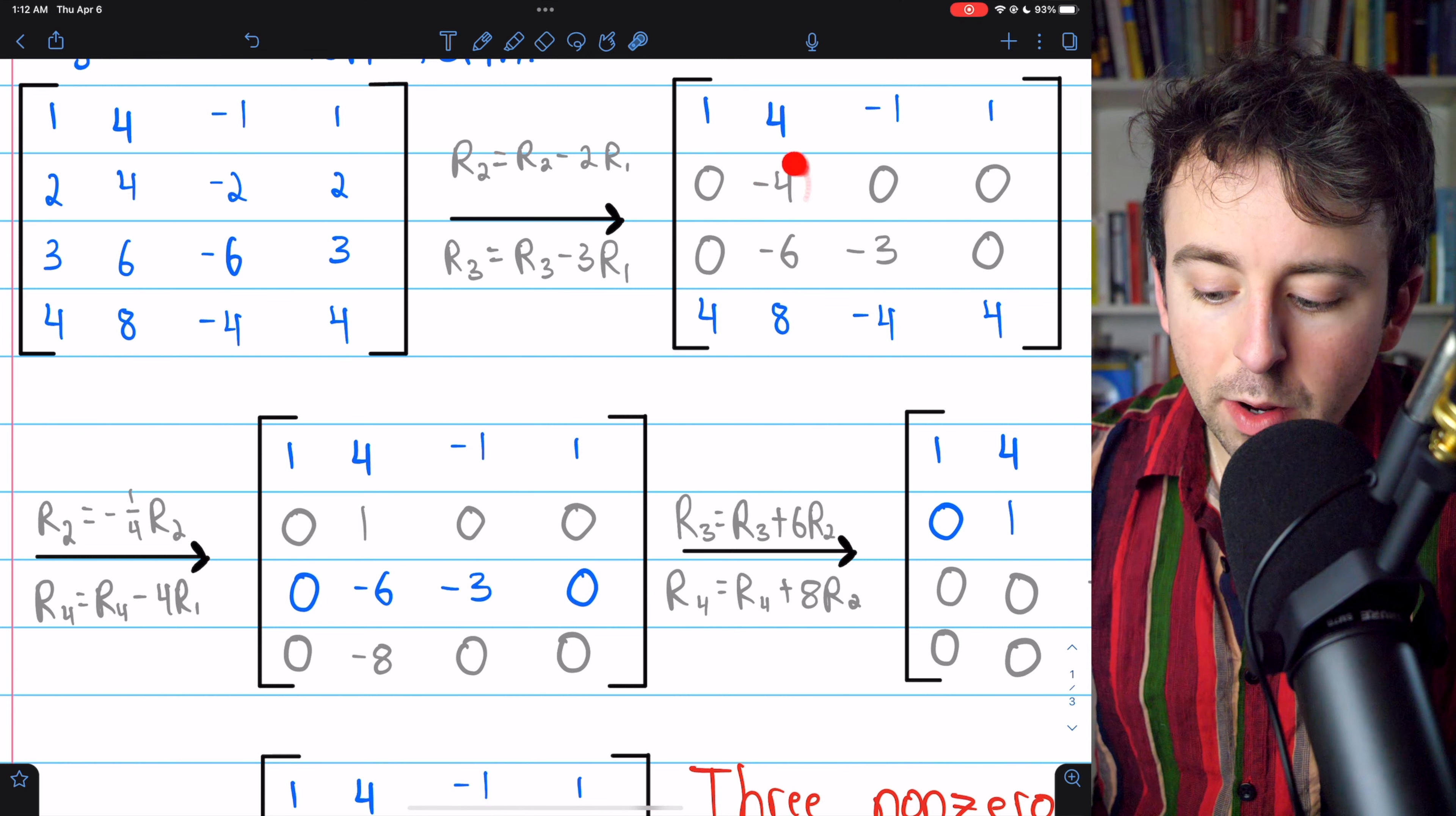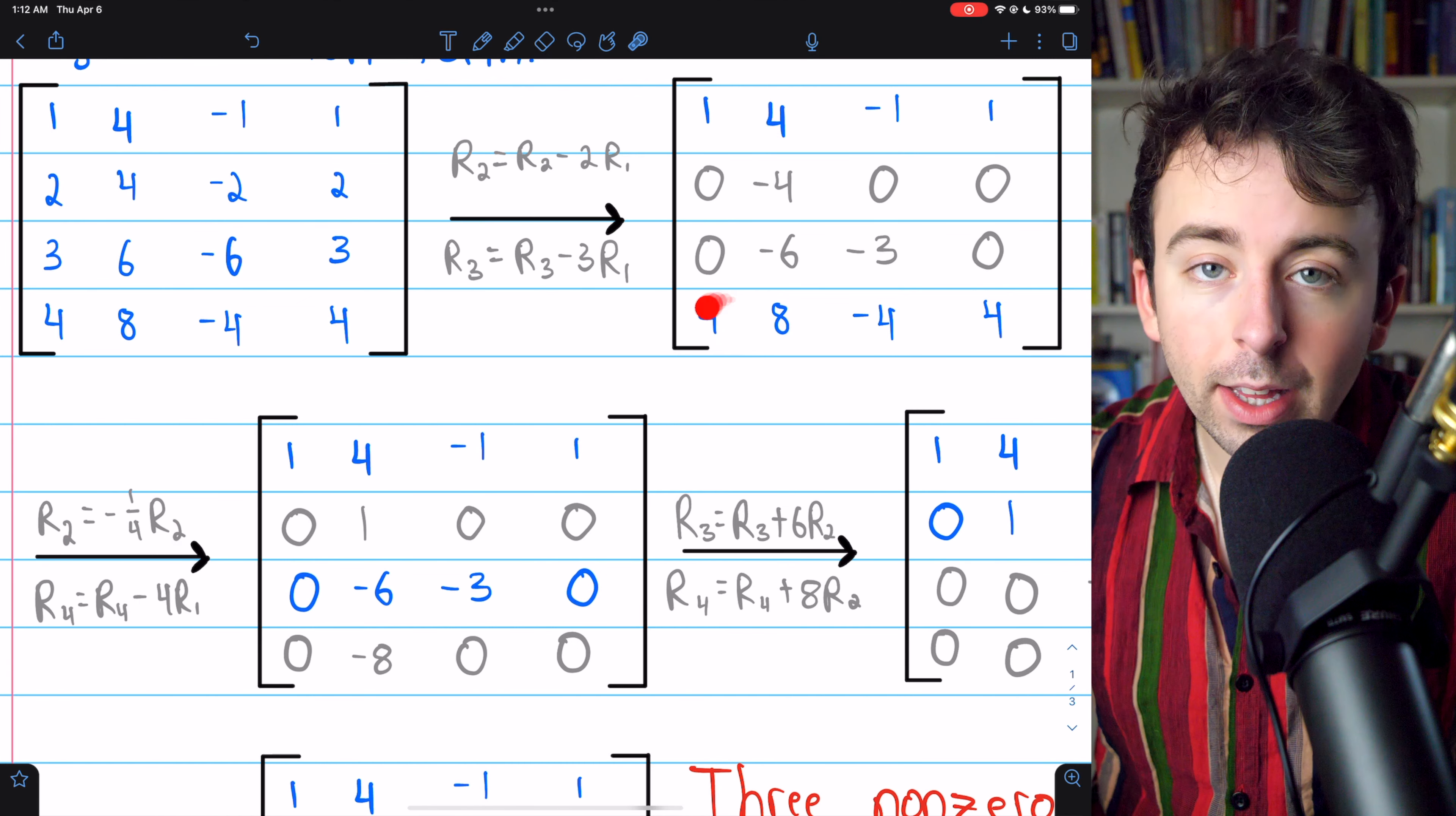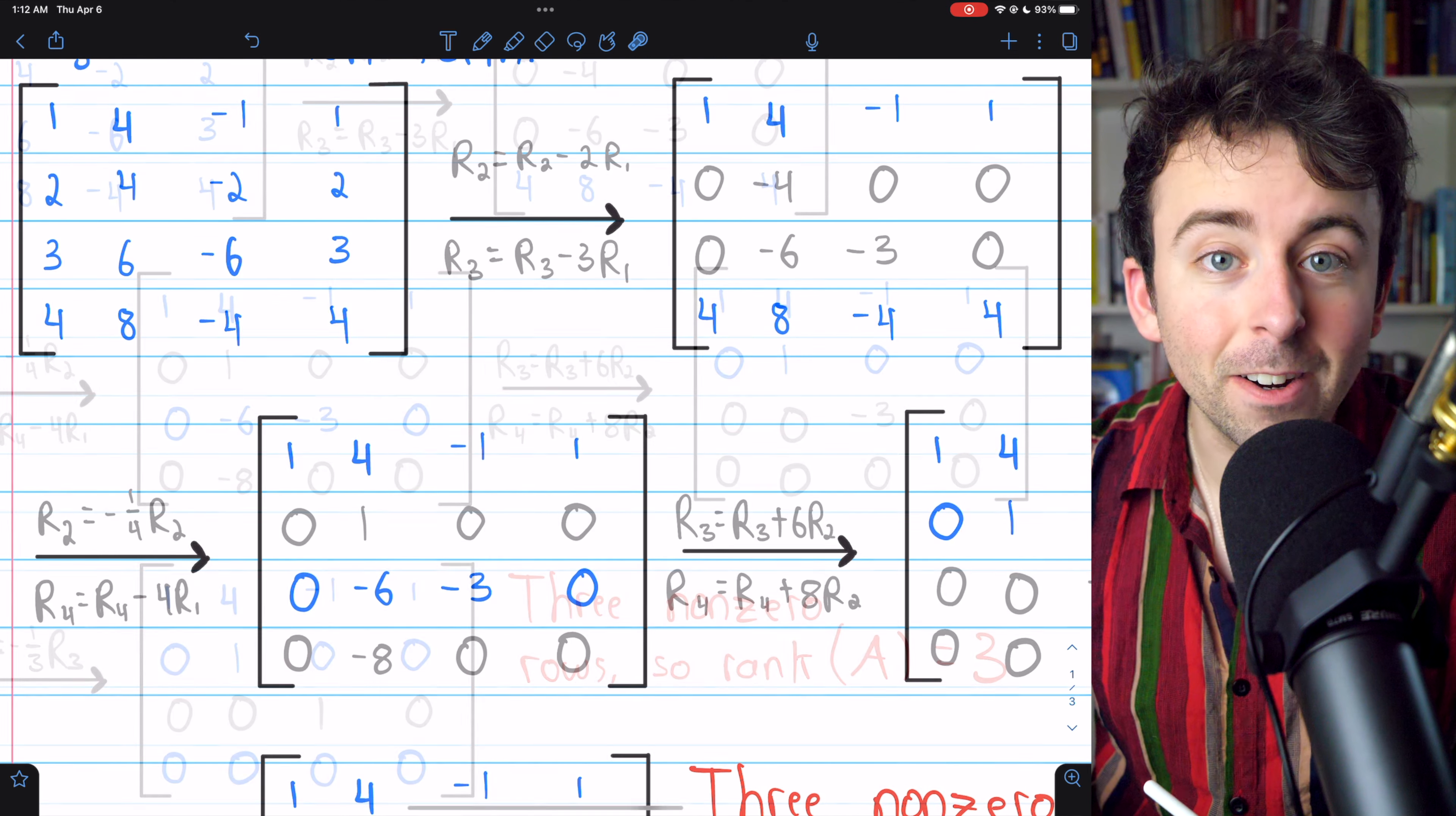Then, to change the leading entry of row two to positive one, we multiply row two by negative one-fourth. And to get rid of the leading four in row four, we subtract four copies of row one from row four, which gets us to this matrix here.